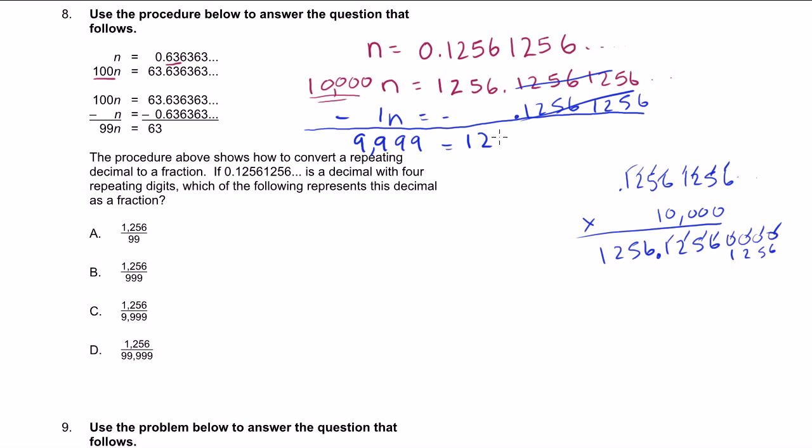So 9,999n, remember there's a coefficient there, is equal to 1,256. Or if we divide both sides by 9,999, you get n is equal to 1,256 divided by 9,999. And that is one of our choices.